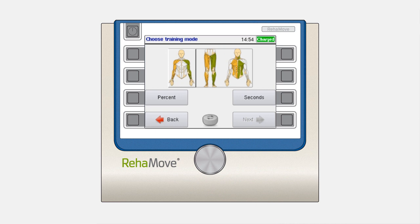In the next step, you have to choose between percent and second mode. To do this, use the third button on the right or the third button on the left. Your choice will be marked in green.